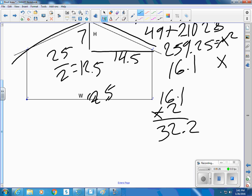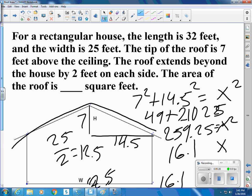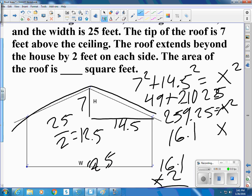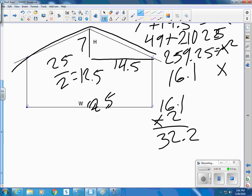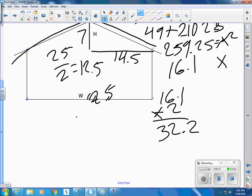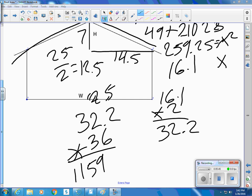And then the length of the house is 32, but we have 2 feet overlap on each side. So 36. To find the square feet. Close to 1,159 feet. We would probably round up. Maybe get 1,200 square feet of shingles.